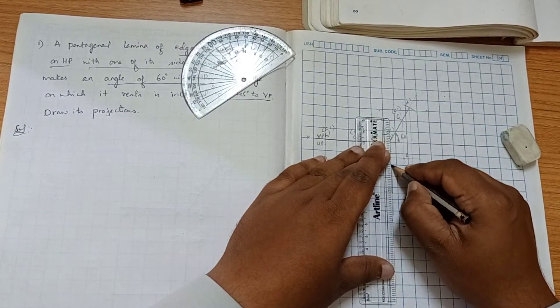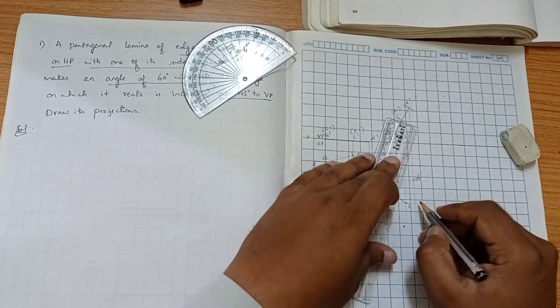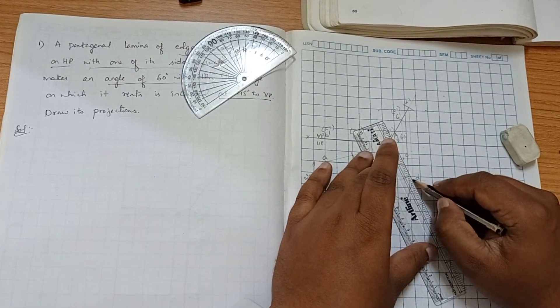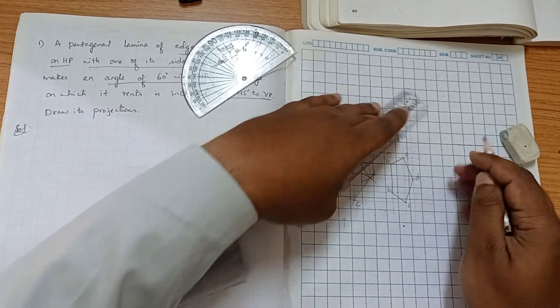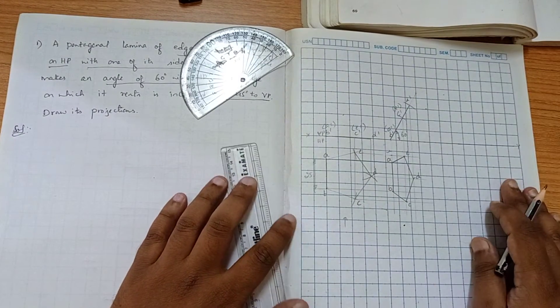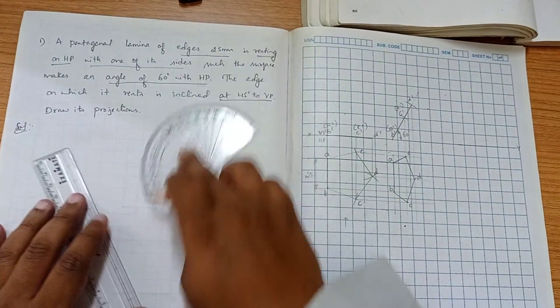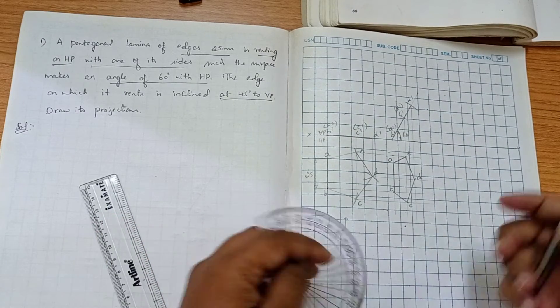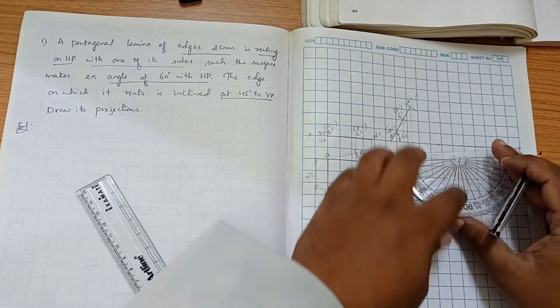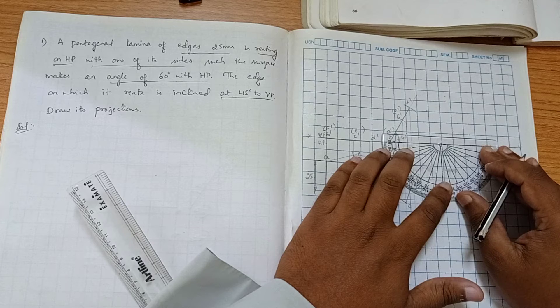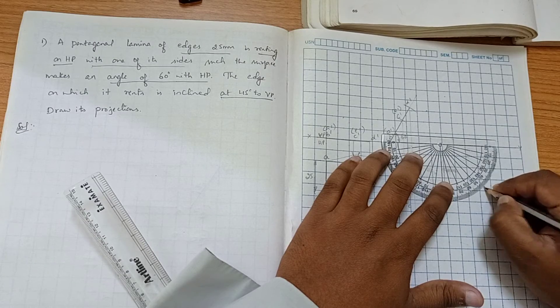Now, similarly, we can construct the third position. Third position angle of inclination it is 45 degree. First we are going to mark the reference point. Now to this reference point, we will be marking it. Okay, 45 degree.